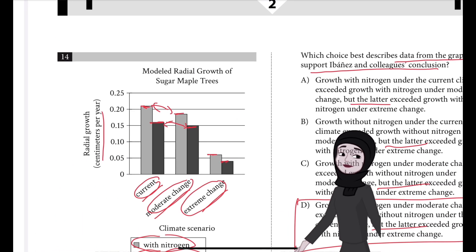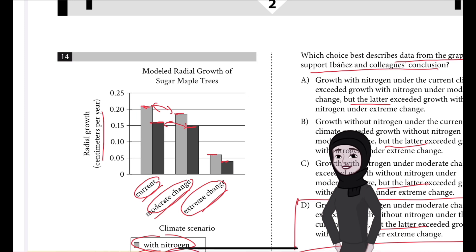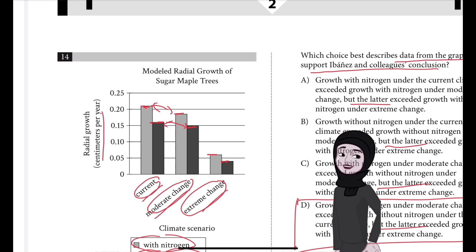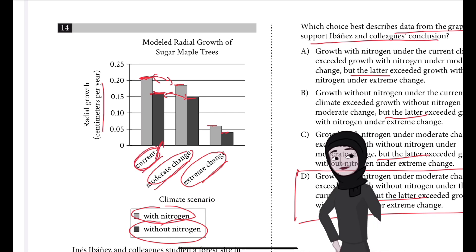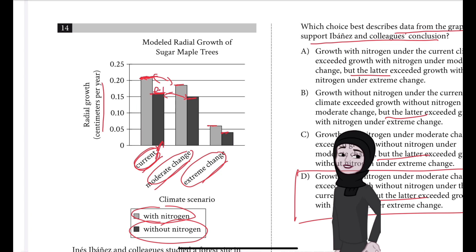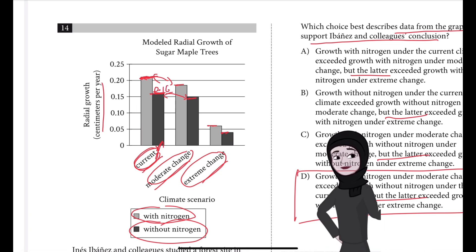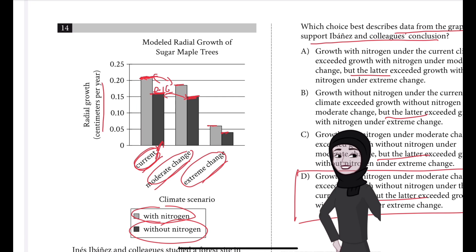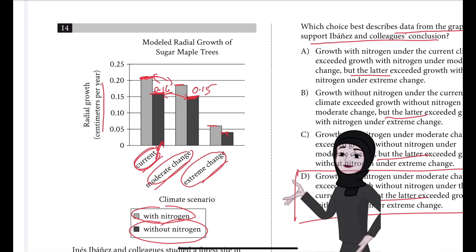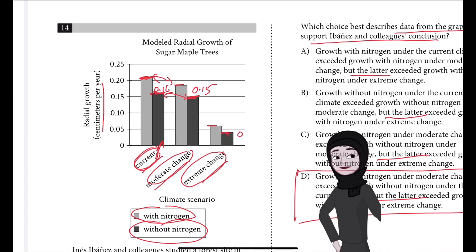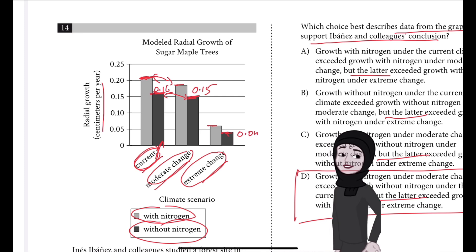The bar graph shows the growth of sugar maple trees with and without nitrogen under three climate scenarios: current conditions, moderate change, and extreme change. Radial growth without nitrogen fertilization is projected to be 0.16 cm under current conditions — the black bar is a little above 0.15. Without nitrogen under moderate change it is 0.15 cm, and under extreme change it is less than 0.05, in fact about 0.04 cm.